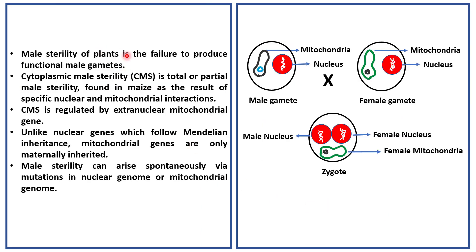Male sterility of plants is the failure to produce functional male gametes. Cytoplasmic male sterility, or CMS, is total or partial male sterility found in maize as the result of specific nuclear and mitochondrial interactions. CMS is regulated by an extranuclear mitochondrial gene.